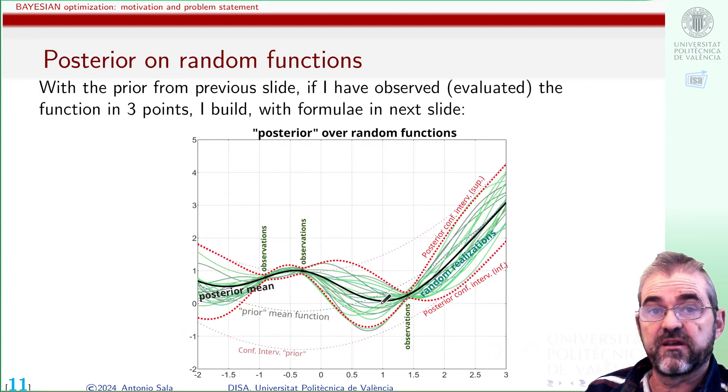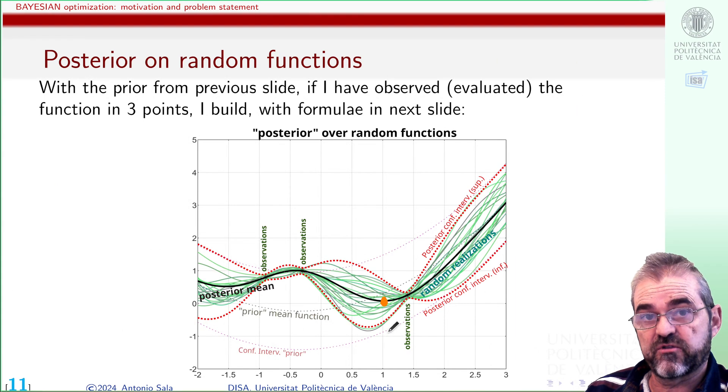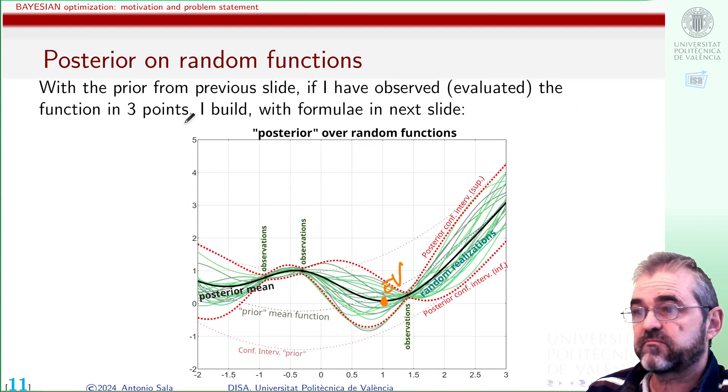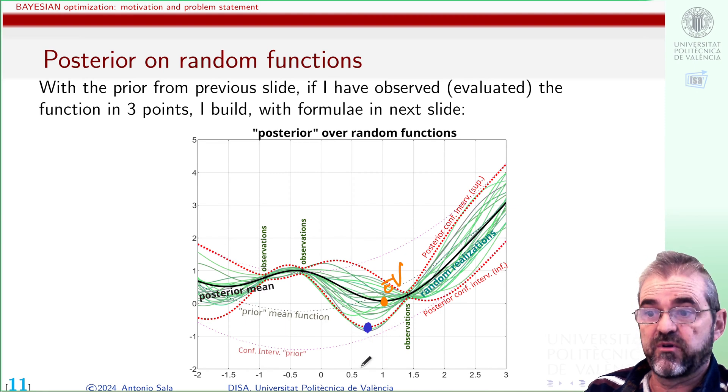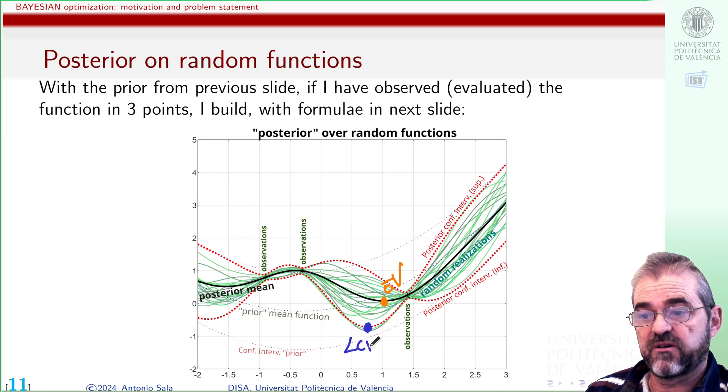We can think in sampling the point with better expected value, the posterior mean. We can think in sampling the point with minimum lower confidence bound.